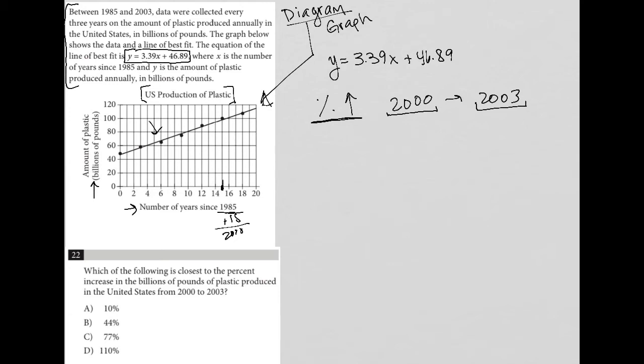We track that up to our value here, which is really pretty much on the line of best fit but maybe slightly higher. I'm going to say it's at the junction here of 15 and 100. So in the year 2000, there were 100 billion pounds.